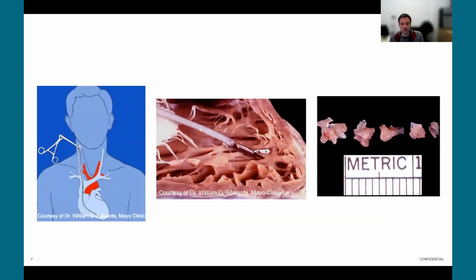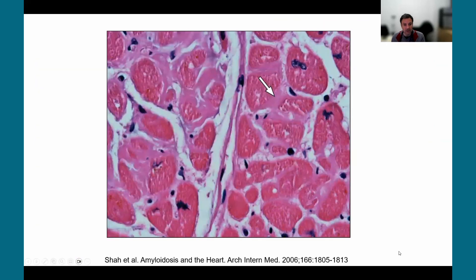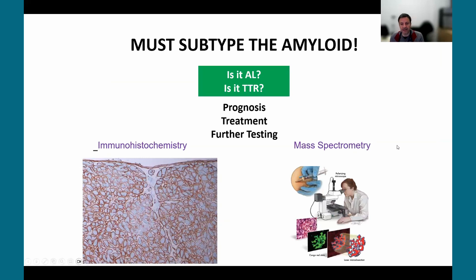When we do a heart biopsy to determine if someone has cardiac amyloidosis, we see indirect evidence on H&E stain — the pink amyloid surrounding the red muscle cells. Ultimately, the pathologist has to tell us if it's AL or TTR using either immunohistochemistry or mass spectrometry, because the prognosis is different, the treatment is different, and further testing is different. So it's crucial to distinguish between these two types.